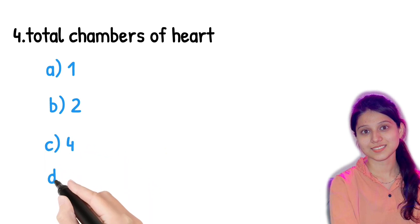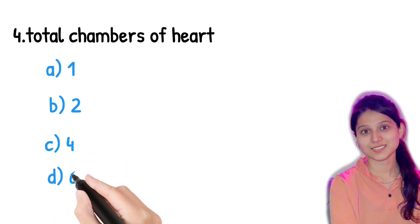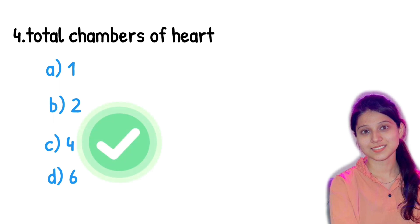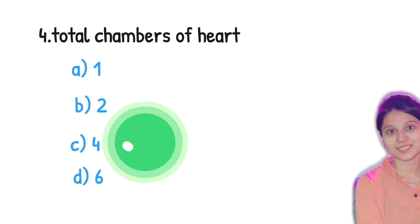Next question: total chambers of the heart — is it one, two, four, or six? There are total four chambers in our heart: right atrium, right ventricle, left atrium, and left ventricle.